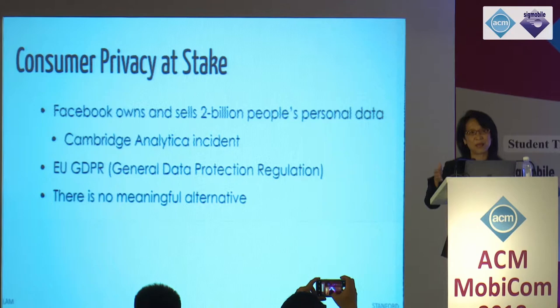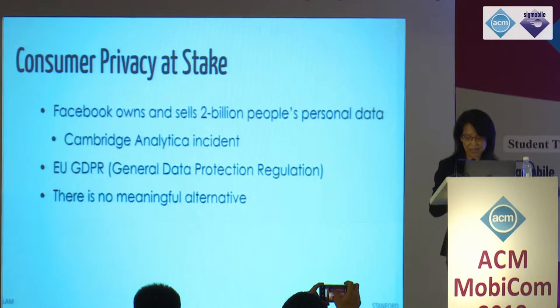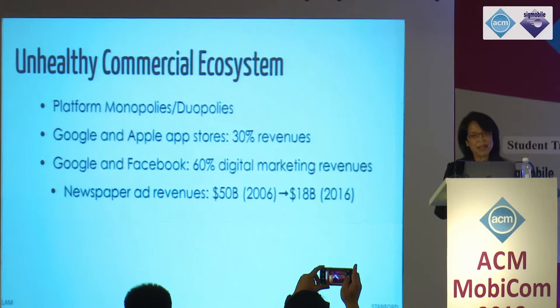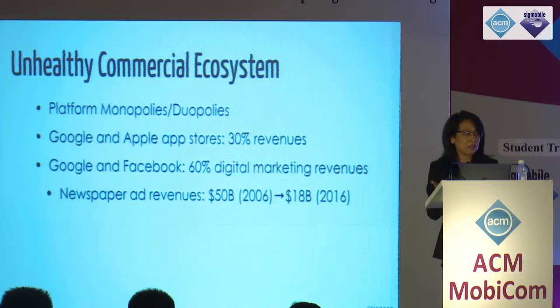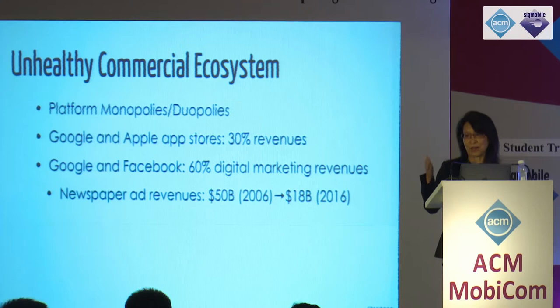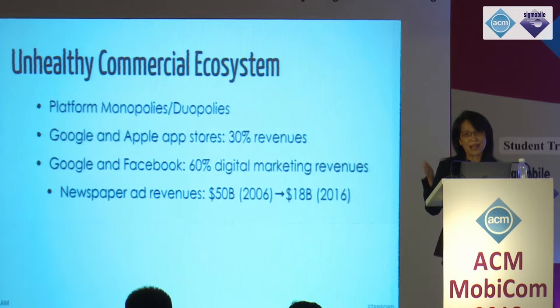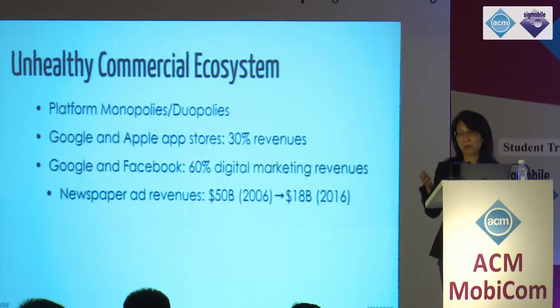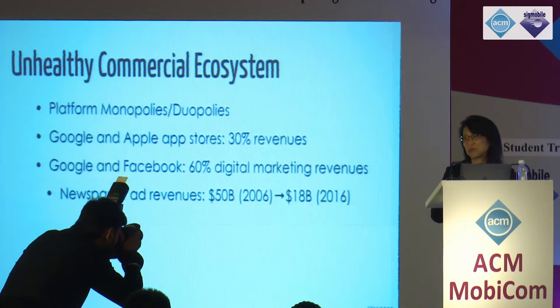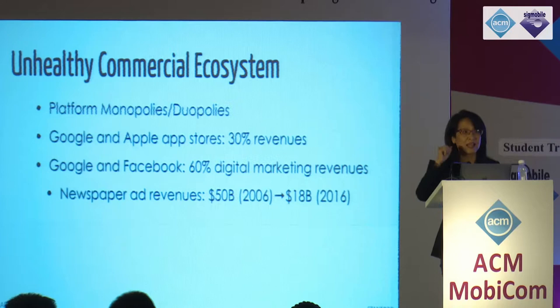Let's take a look at what's going on in the industry space. We have a pretty unhealthy commercial ecosystem — a lot of platform monopolies or duopolies. Anybody putting an app on the Android or iPhone has to give Google and Apple 30% of revenues — not profit, revenues. How many companies have a 30% margin? You still have to spend money on marketing. Between Google and Facebook, they take 60% of digital marketing revenues, squeezing digital marketing companies' income.